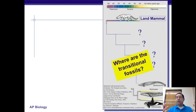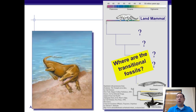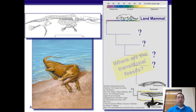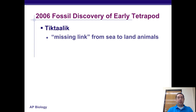For a long time, transitional species or transitional fossils weren't being found where we expected. The question was: where are they? Why are they not showing up? Is there a problem with the theory of evolution? Another transitional species is Tiktaalik, which shows the evolution of species going from living in the sea to living on land. It was discovered relatively recently, back in 2006.